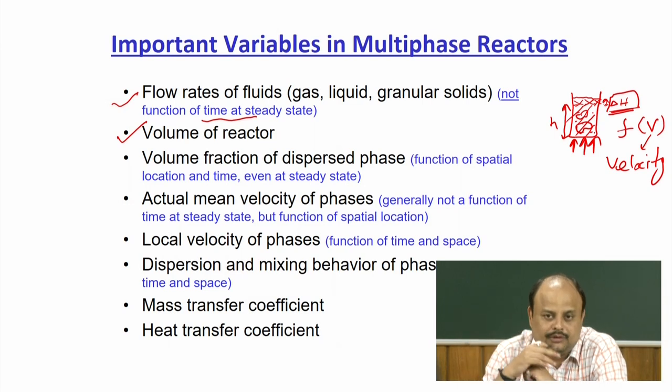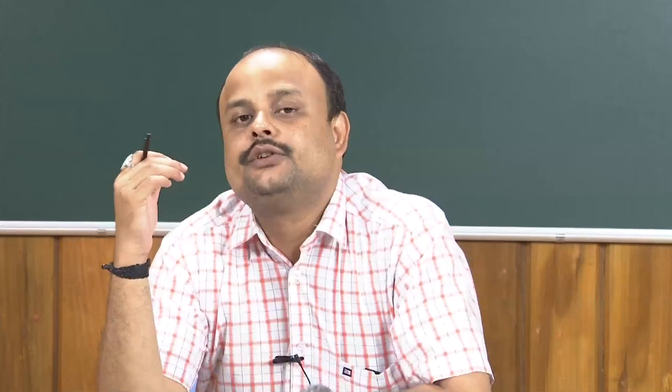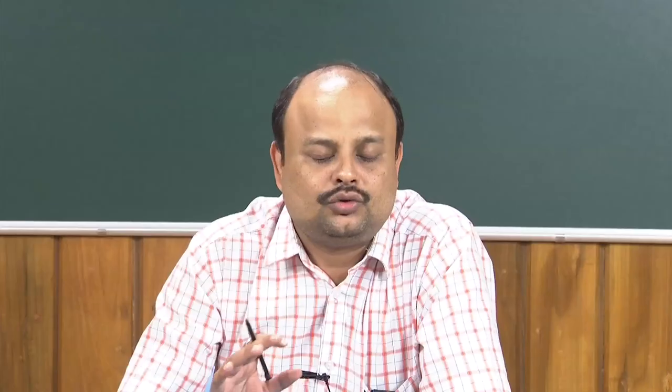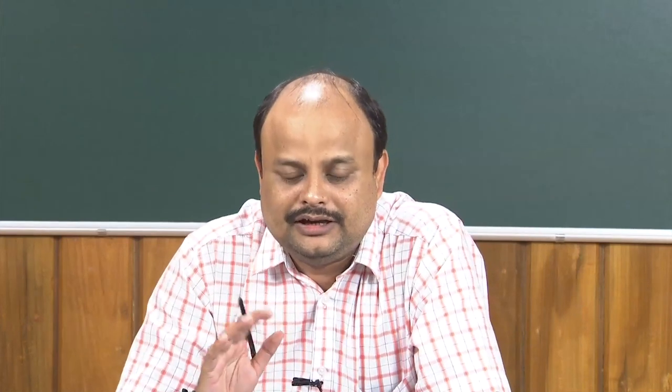Understanding the volume of the reactor is one important variable for understanding the contacting mechanism. Then there is the volume fraction of the dispersed phase. Volume fraction is the fraction of that phase divided by the total volume of the reactor. For example, the volume of gas divided by the volume of the reactor is the gas volume fraction. That is how volume fraction is defined.